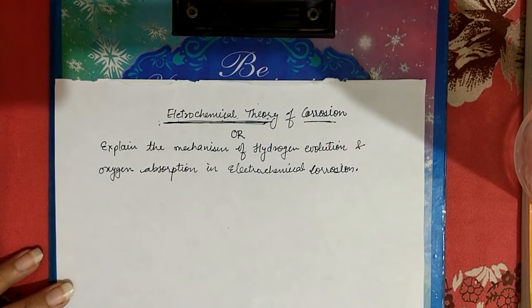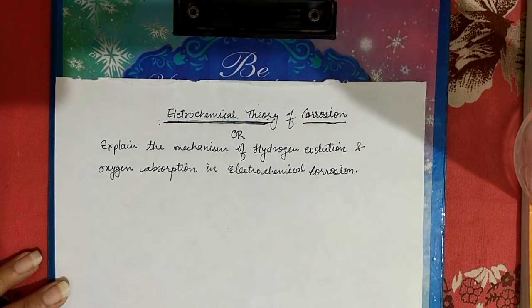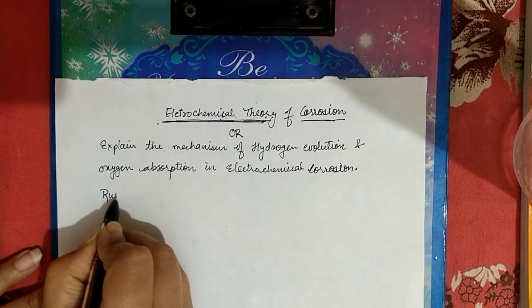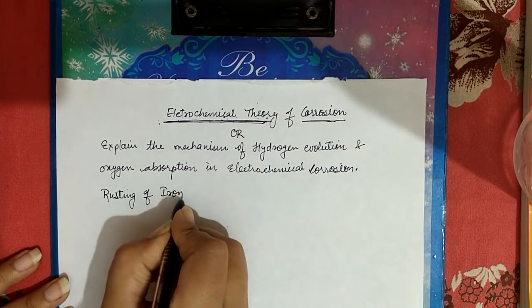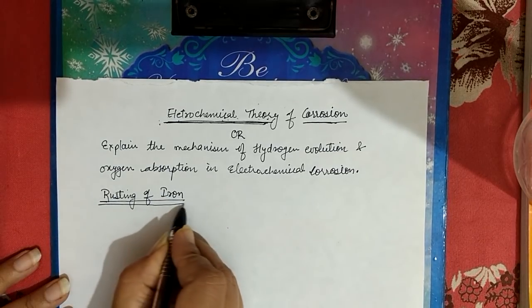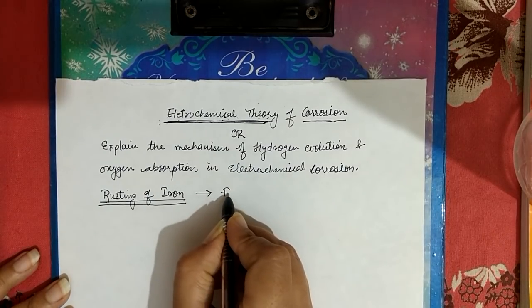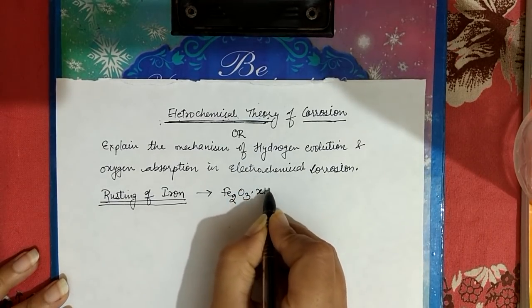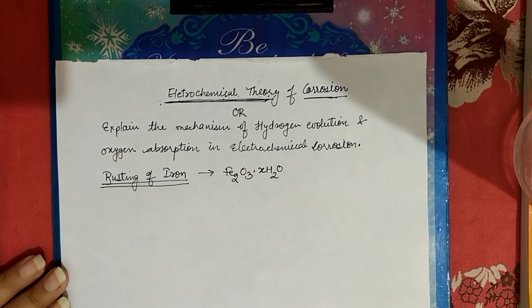Now let's see how corrosion happens in any metal. Let's take iron as our example metal. The formula for the rusting of iron is Fe2O3 into x molecules of water — this is the formula of rusting of iron.